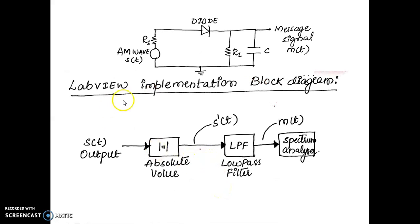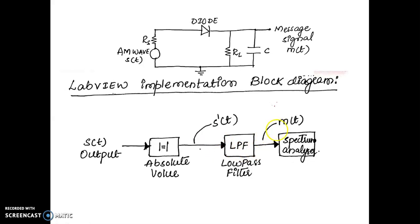This is how the envelope detector is demonstrated and realized in LabVIEW. The amplitude modulated waveform is applied to an absolute value block, which gives a rectified amplitude modulated waveform written as s'(t). That is then passed to a low-pass filter, which gives the output m(t), and that can be fed to a spectrum analyzer to understand the frequency content of the low-pass filter output.